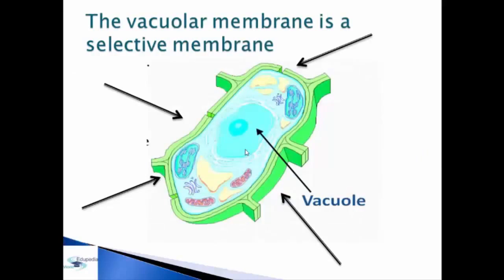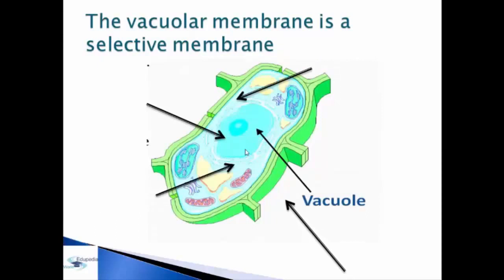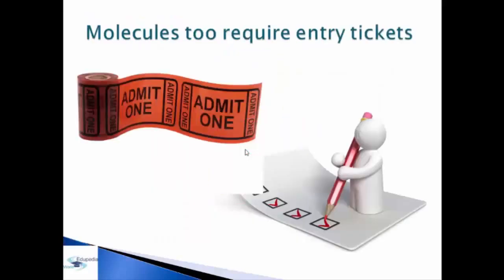The vacuole membrane, or tonoplast, is a selective membrane and the passage of chemicals through it is controlled in both directions. Water can pass in and out freely, but other small molecules are retained within the vacuole. Many proteins arriving at the cytoplasmic surface of the vacuoles are synthesized with the membrane-bounded ribosomes of the rough endoplasmic reticulum and transported to the vacuole via the Golgi apparatus. In the Golgi apparatus they are given a combined address label and ticket — the address directs the protein to the vacuole and the ticket portion helps it gain admission.